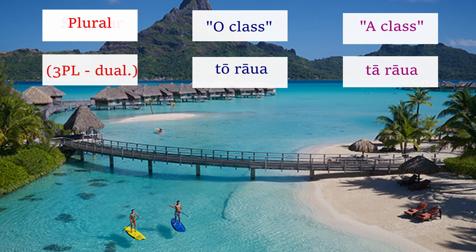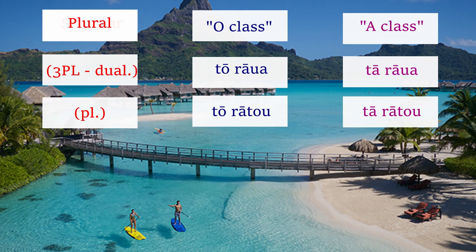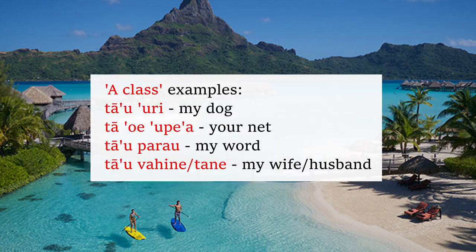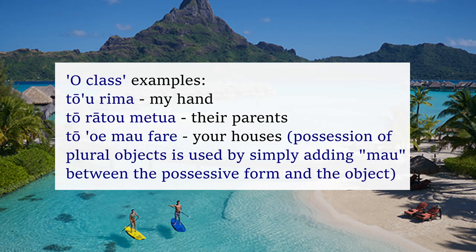In the third person dual — meaning 'they' but only two people — you would say to-rua and ta-rua. And in the third person plural — meaning 'they' with more than three people — you'd say to-ratou and ta-ratou. Possession of plural objects is used by simply adding 'mao' between the possessive form and the object.